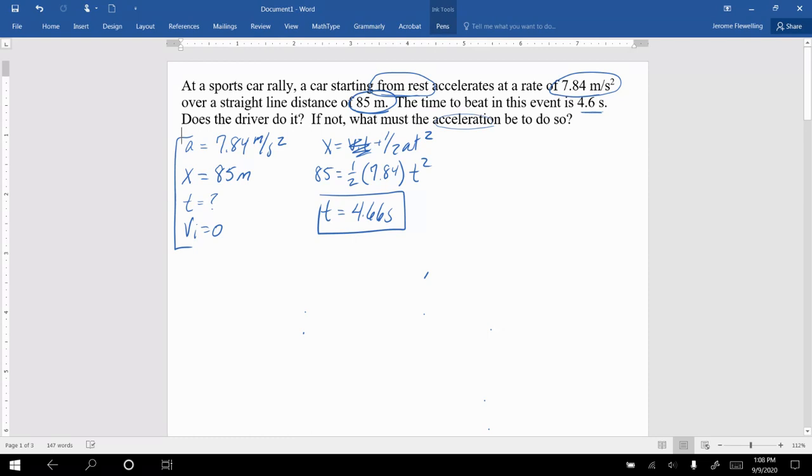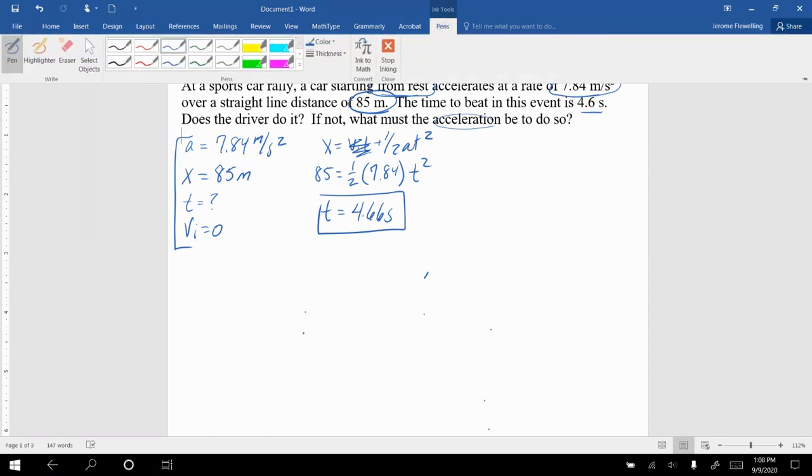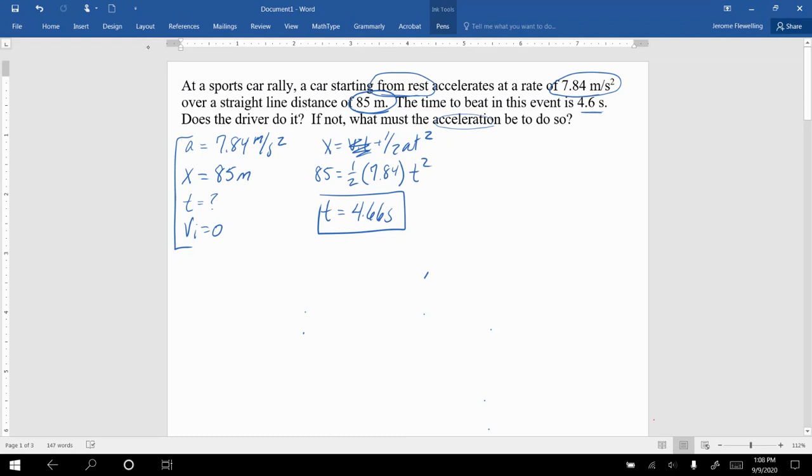So now that A value becomes our variable. If I look at the same thing, I'm going to have the same equation: X equals VIT plus one half AT squared. I have my X position as 85. The initial velocity is still 0, one half of the acceleration, which is what I'm looking for, and I have to beat 4.6 squared this time.